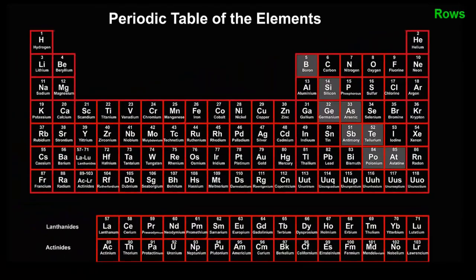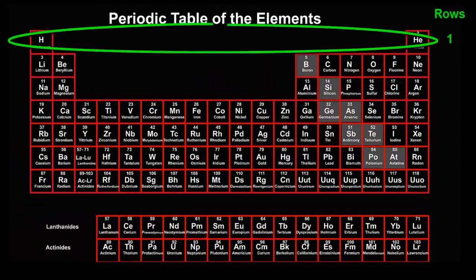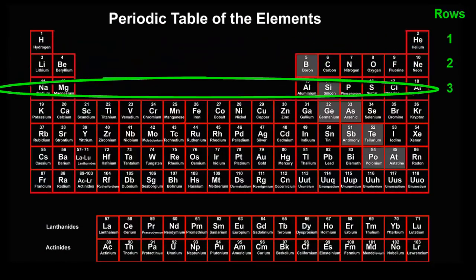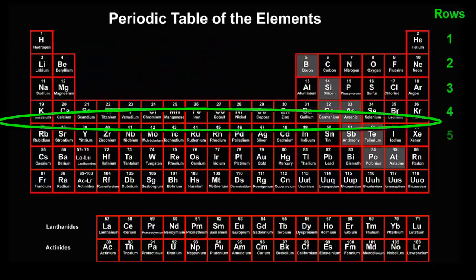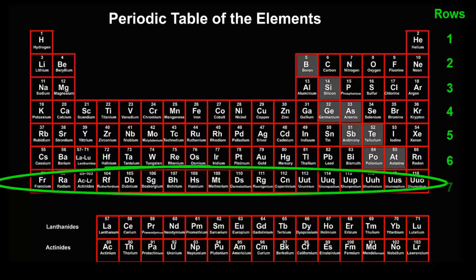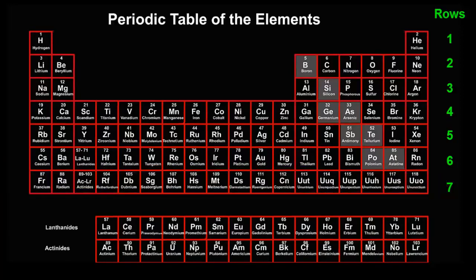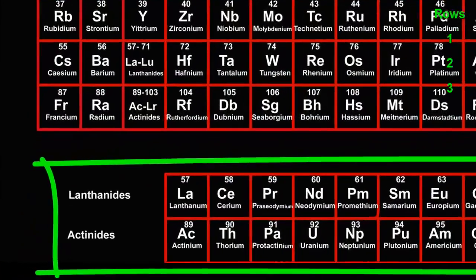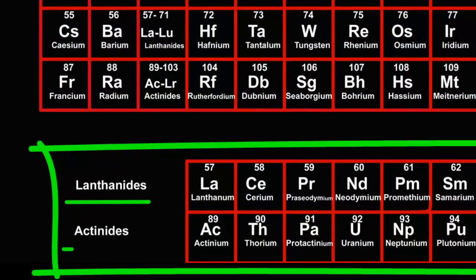How many rows are there? 1, 2, 3, 4, 5, 6, 7. The periodic table has 7 horizontal rows. What about these rows down below, called the lanthanides and actinides?